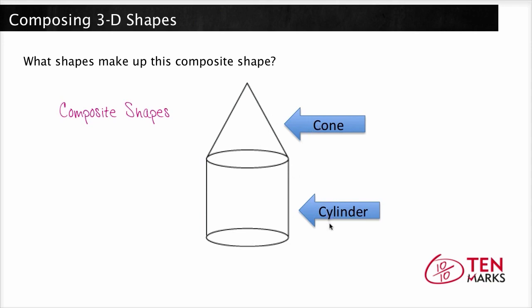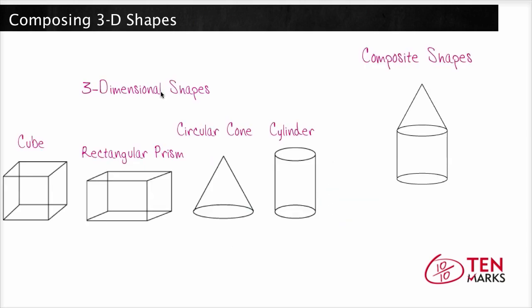Let's review what we've learned. Here are the three-dimensional shapes that we talked about today: a cube, a rectangular prism, a circular cone, and a cylinder. And shapes can be combined to make composite shapes, as you see here, where a cone and a cylinder were combined.